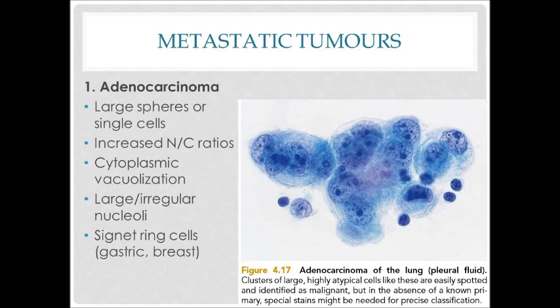Next, I want to talk about the cytomorphology of metastatic tumors. Metastatic tumor is a tumor that has spread from the primary site of origin to different areas of the body. First, adenocarcinoma of the lung — the cells can be in large spheres or appear as single cells. They have increased nucleus-to-cytoplasm ratios. Cytoplasmic vacuolation can also appear, and the nucleoli are large and irregular. You can see the right image is the malignant cells of lung adenocarcinoma in the pleural fluid. If the cytologist has a problem identifying the malignant cells, special stains or immunohistochemical staining can be performed.